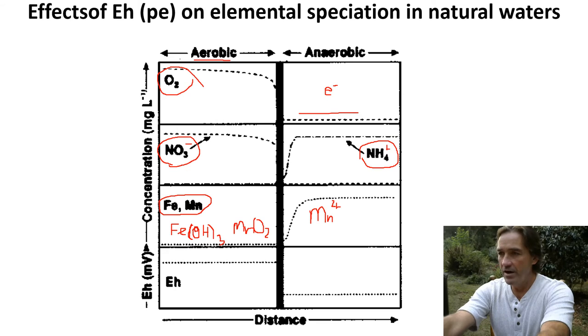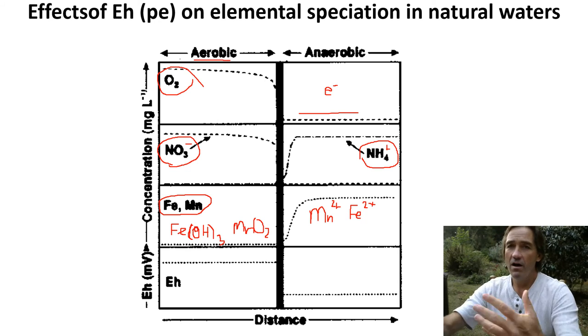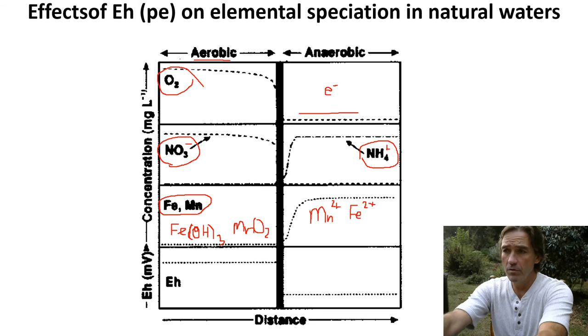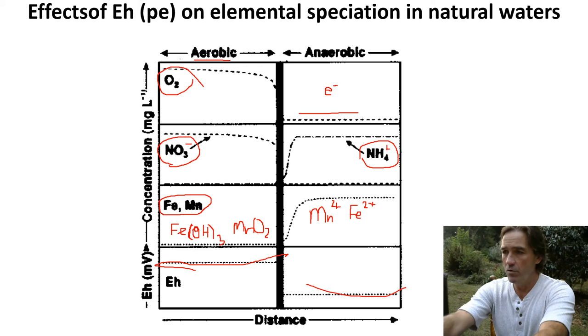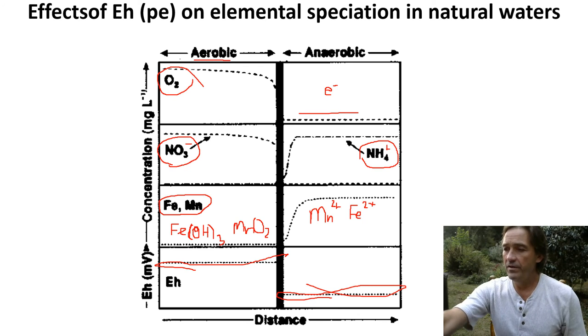These are redox couples where on the left you have iron three, and over here you have manganese four plus. They're in the oxidized form, they have positive charges. Manganese four goes to manganese two, more reduced. Iron three goes to iron two, more reduced. So again, we have high EH on this end, low EH or more negative in the anaerobic environment.